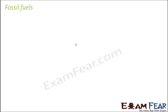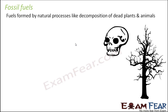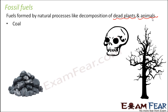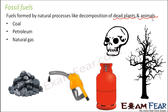When we talk about exhaustible resources, the first that strikes our mind are fossil fuels. Fossil fuels are fuels formed by natural processes like decomposition of dead plants and animals. Anything formed from dead plants and animals is called a fossil, and since they act as fuels, they are called fossil fuels. Examples of fossil fuels are coal, petroleum, and natural gas — coal is formed from dead plants and petroleum from dead marine animals.